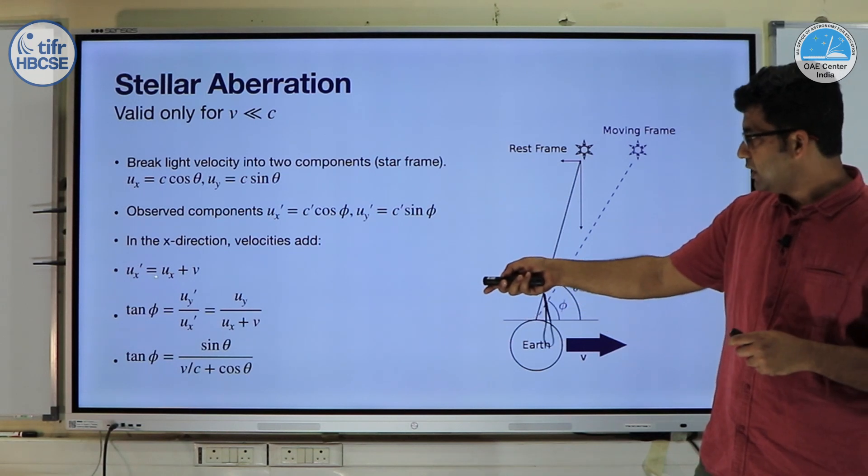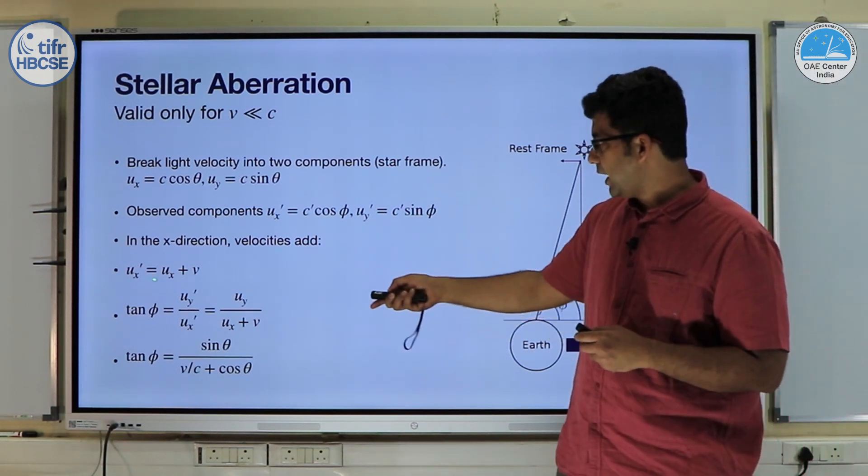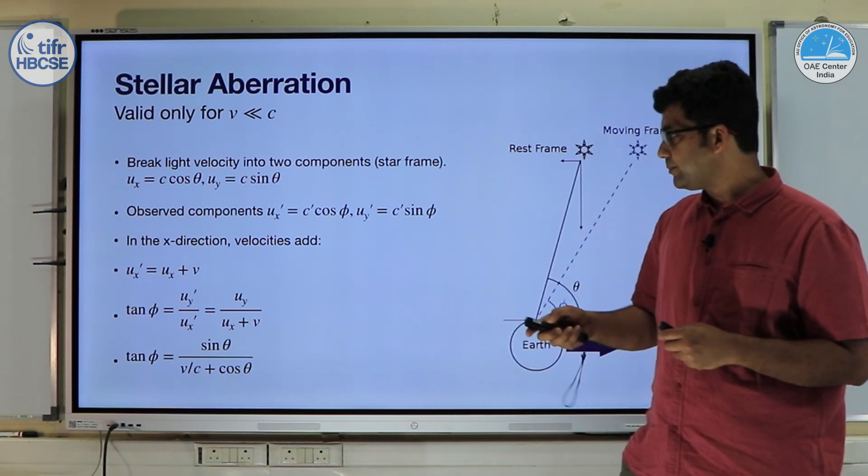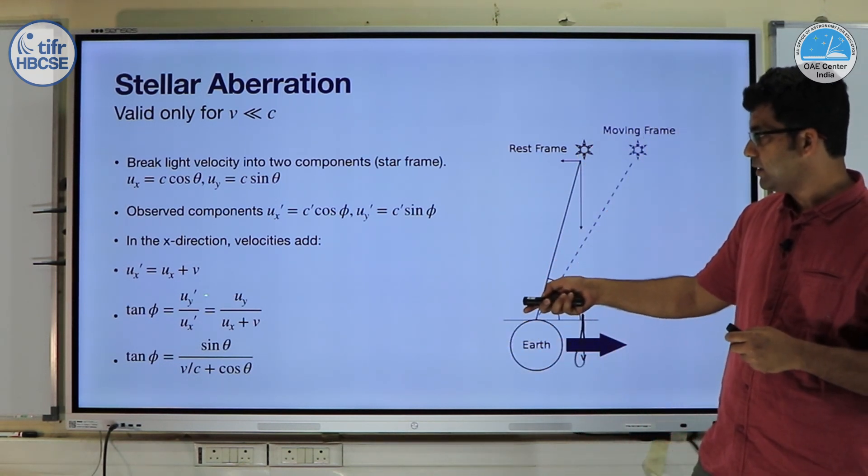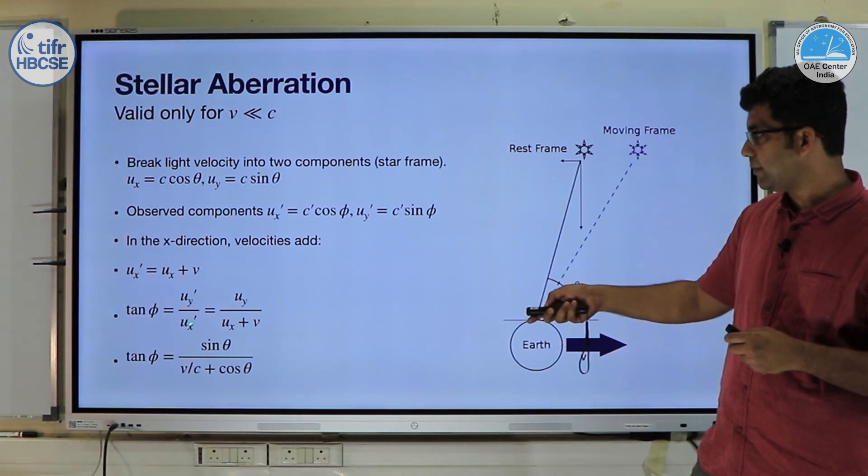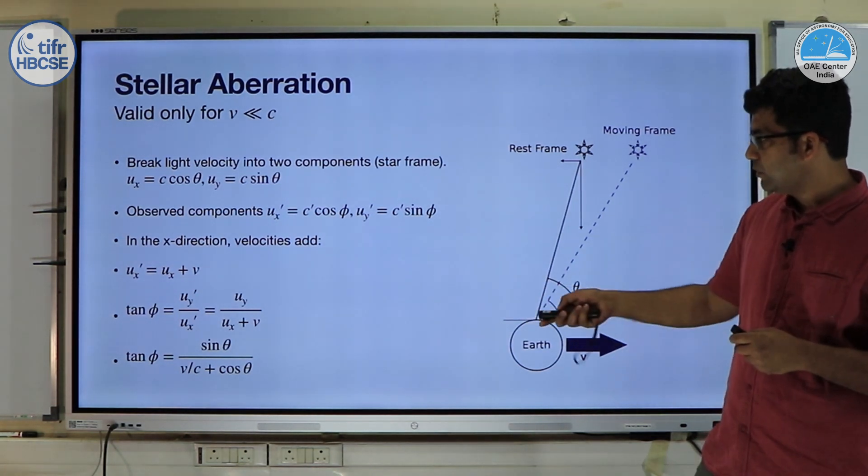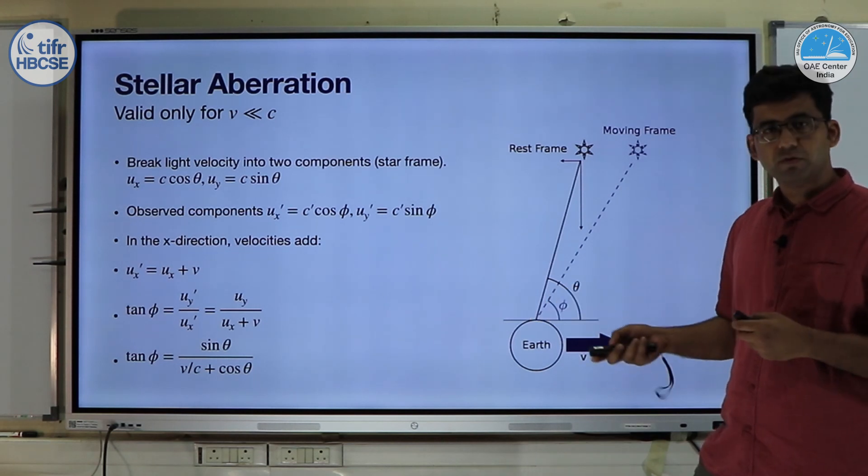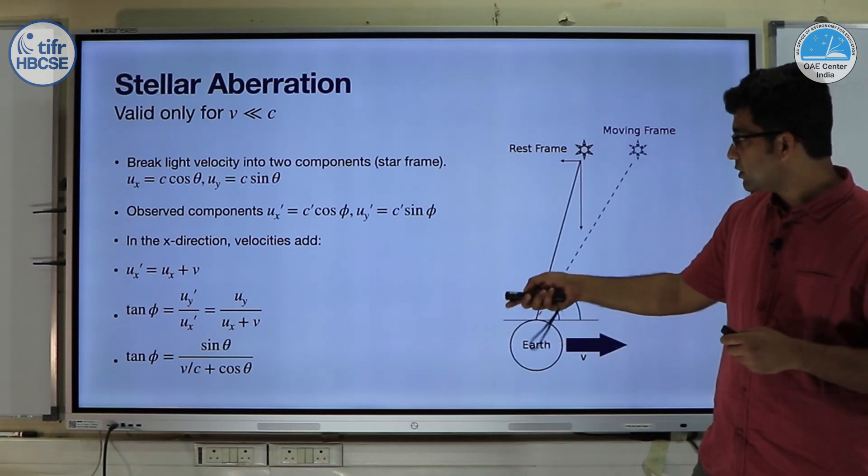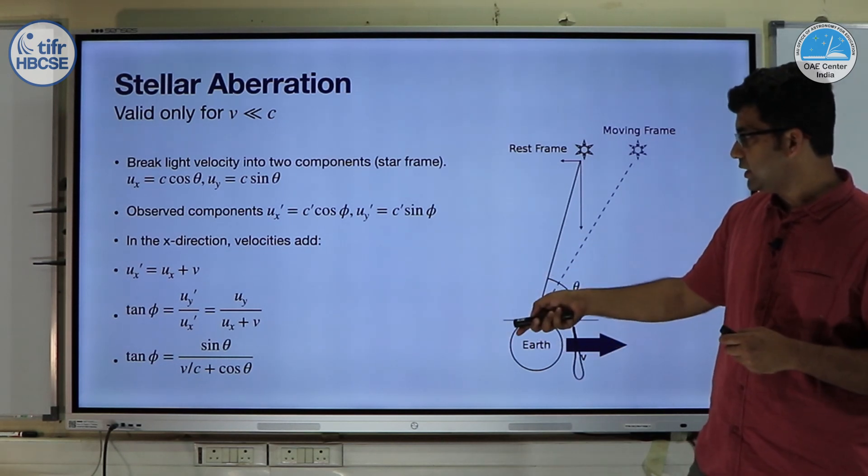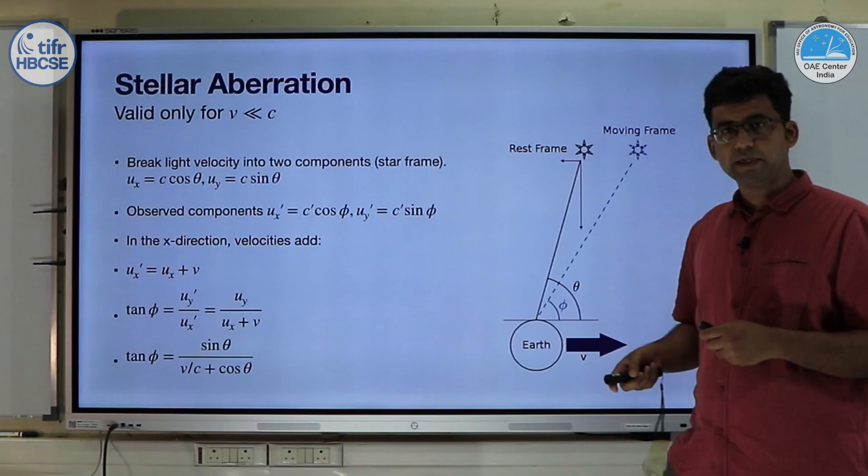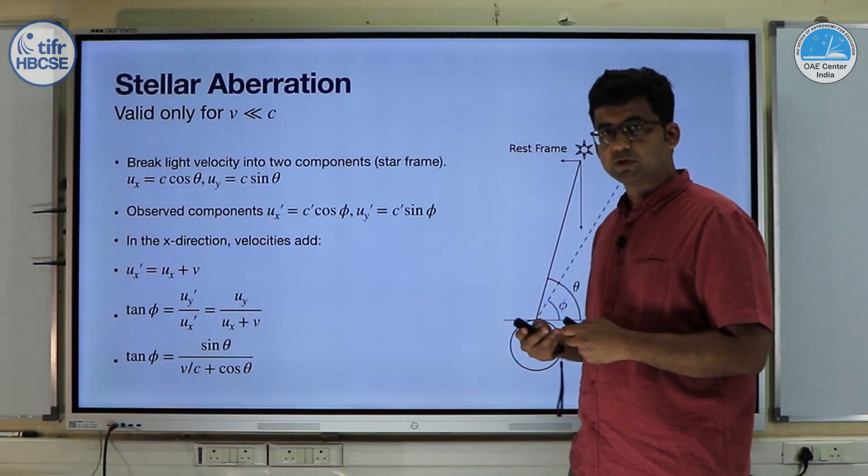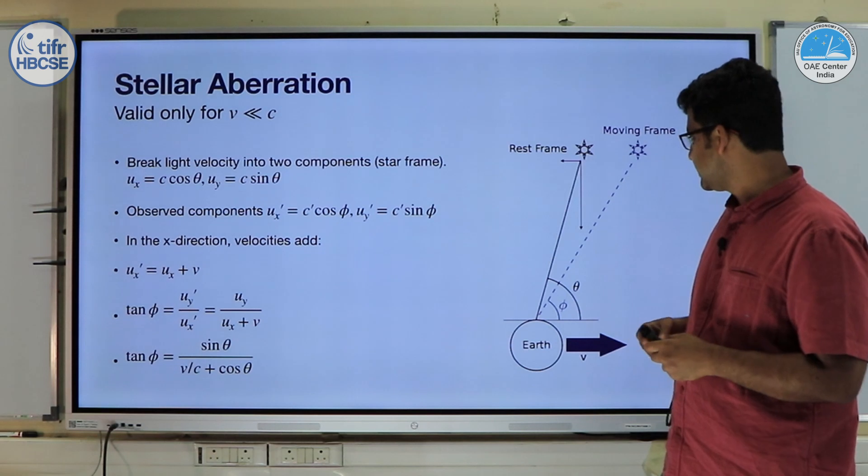Now in the x direction the velocities add up and you have ux' is equal to ux plus v. You can use simple trigonometry to show that tan φ which is equal to uy' divided by ux' will be equal to uy divided by ux plus v. You can substitute these components in here to show that tan φ is equal to sin θ divided by v/c plus cos θ. This is valid only again for v which is much much smaller than the speed of light c.